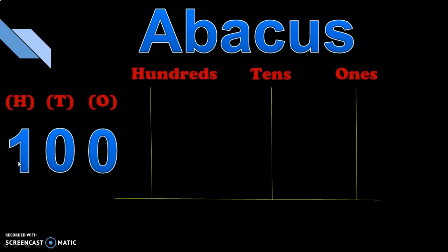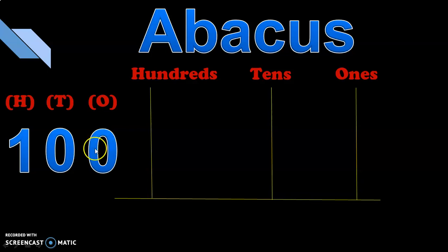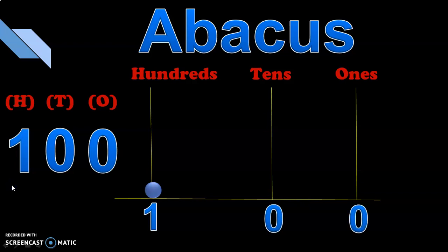Now let us see how to represent the number one hundred on an abacus. This abacus will have three spikes: the first one for ones, the second for tens, and the third for the new place value, hundreds. In one hundred we have one hundred, zero tens, and zero ones. So write the number one in the hundreds spike and place one bead there. In the tens and ones spikes there will be no beads. This is how one hundred is represented on an abacus.